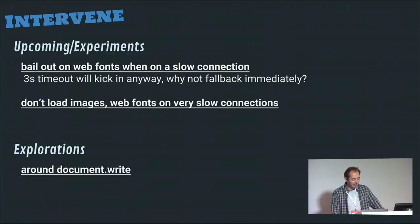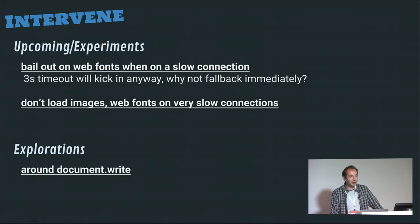The last section covers things that might be against the spec, but we might still consider doing because we think it could be better for the user. One example currently in progress: right now for web fonts there is a three-second timeout after which we fall back to the system font. Looking at our metrics, we found that on slow connections this happens a lot. So instead of waiting for that timeout, what if we decided to use the system font from the get-go on slow connections? That's one thing we're looking into.